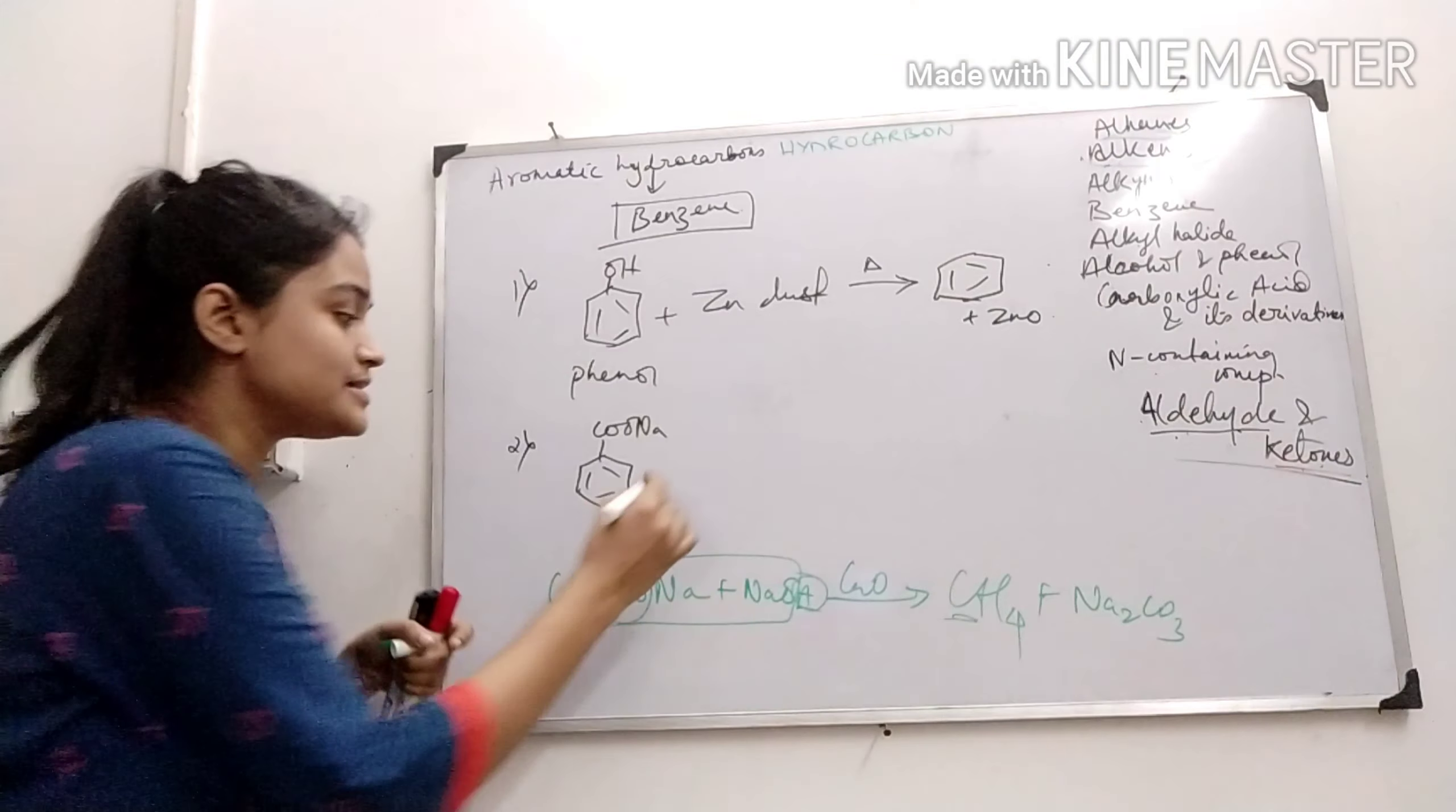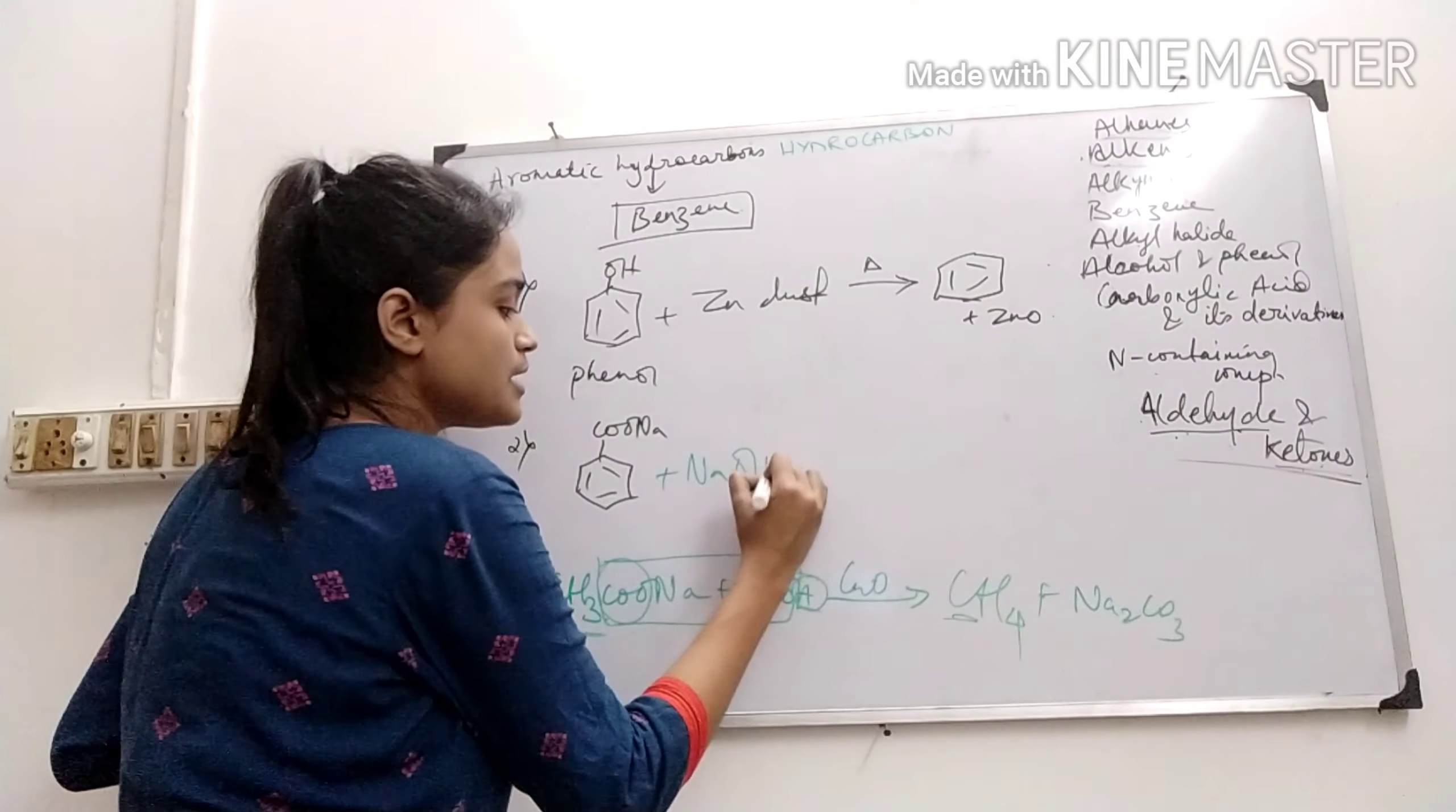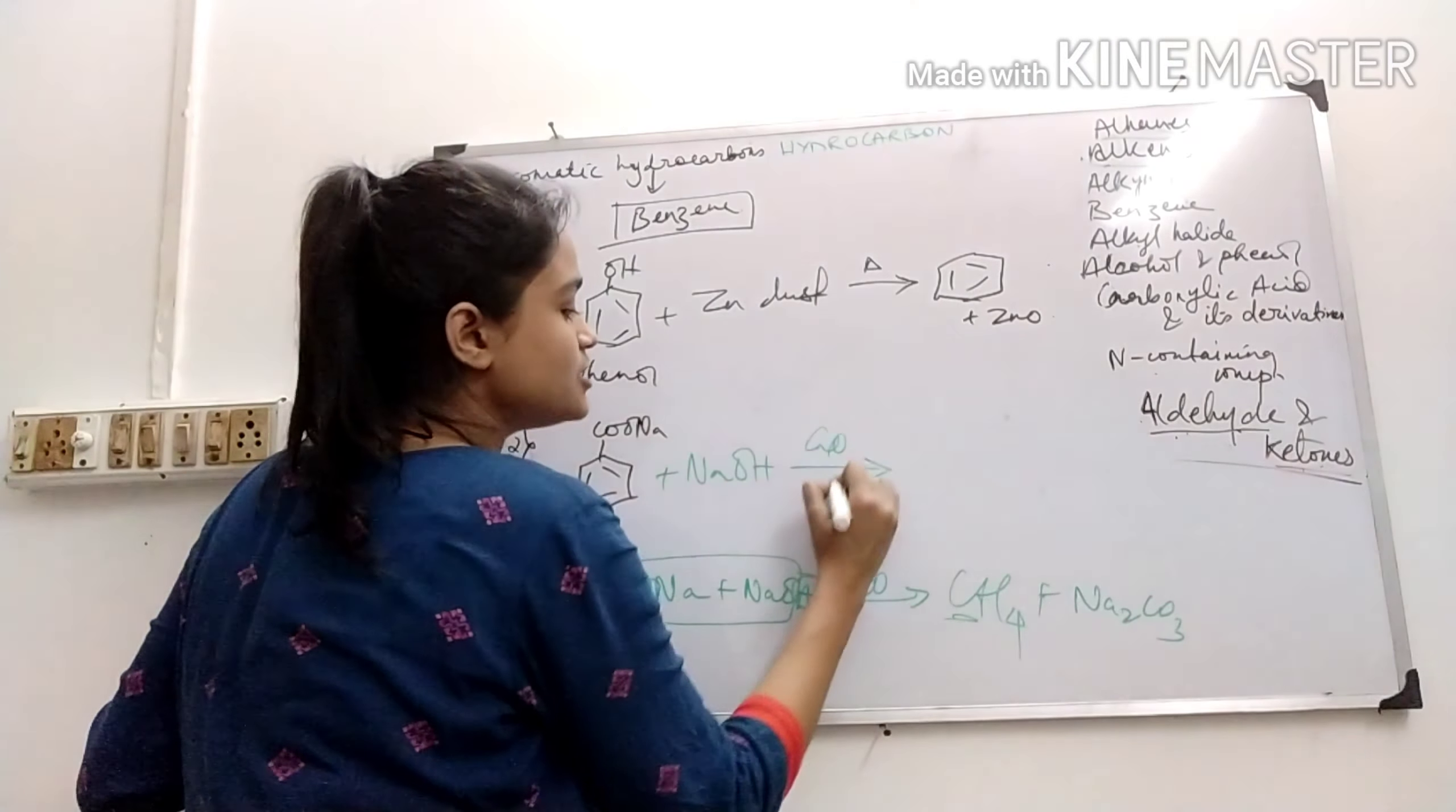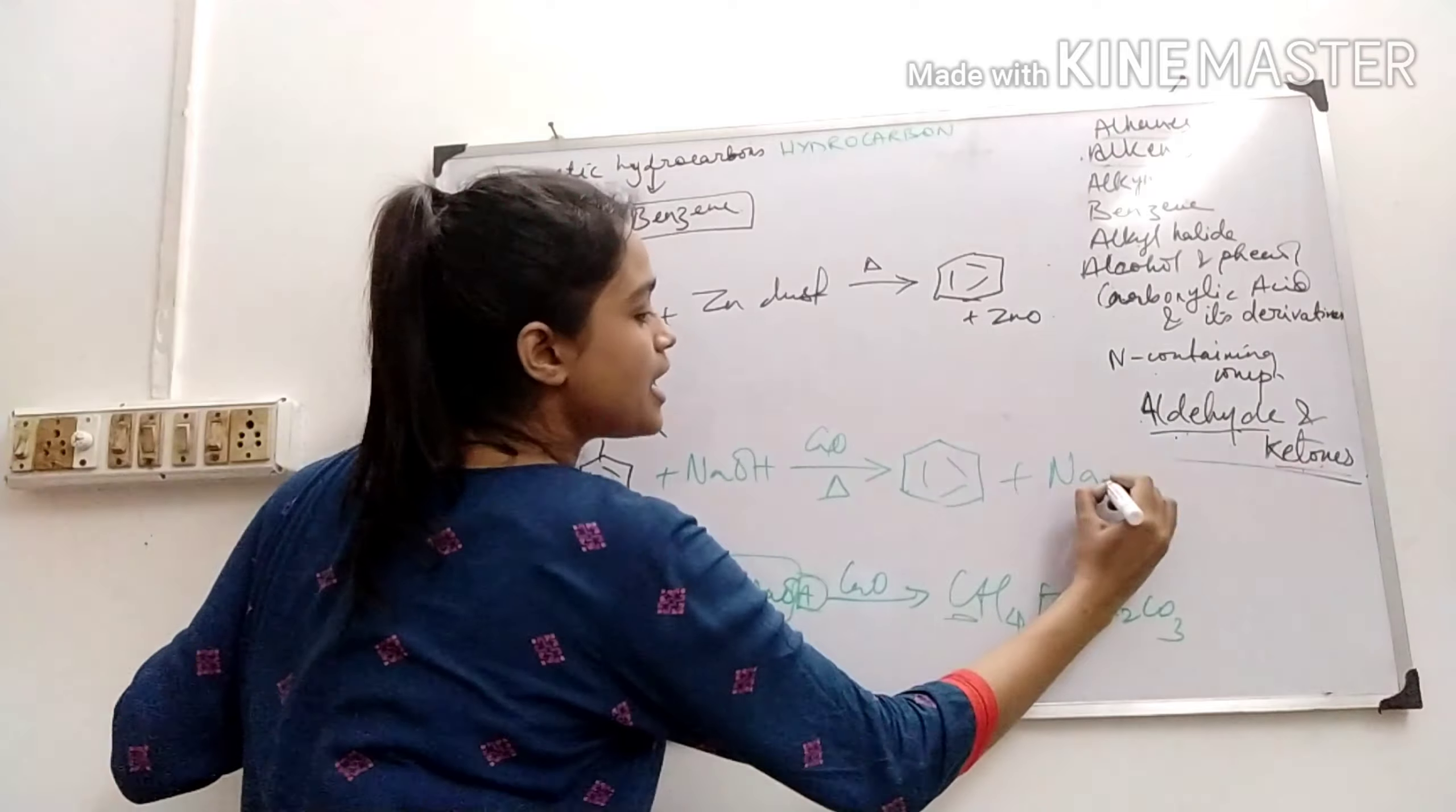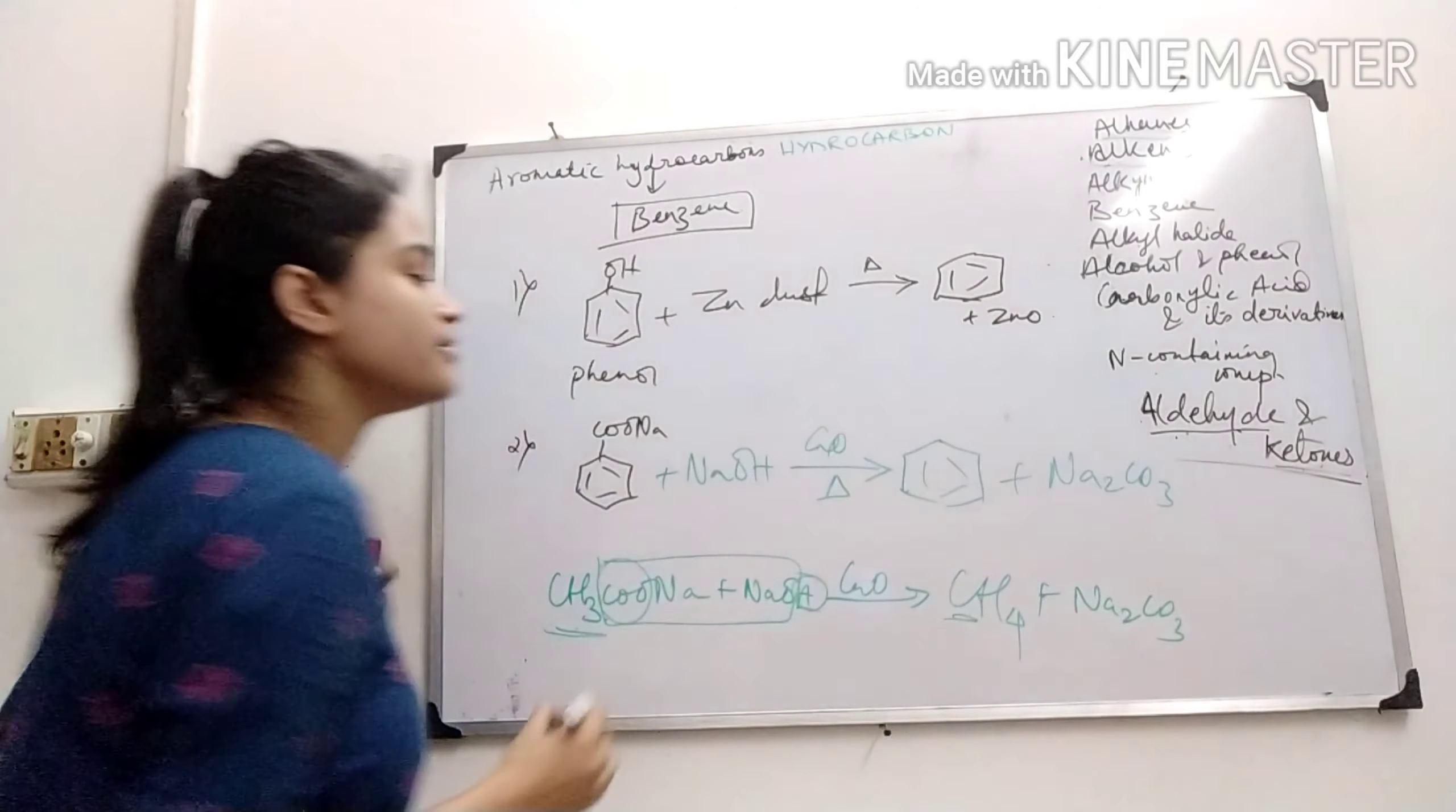In this case also same thing. If I add sodium hydroxide in presence of calcium hydroxide we will get benzene and sodium carbonate will be liberated.